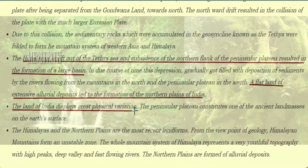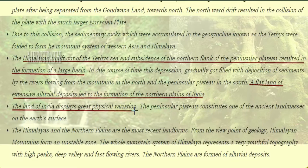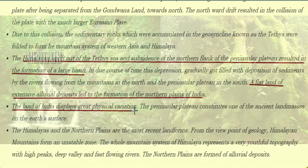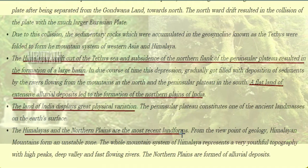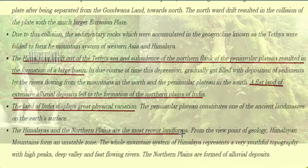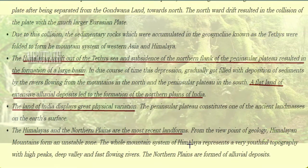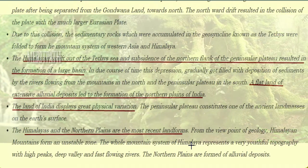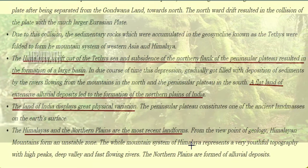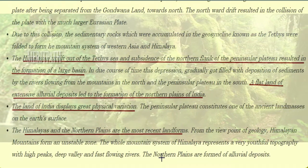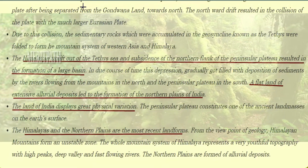The land of India displays great physical variation. The peninsular plateau constitutes one of the ancient landmasses of the earth's surface, while the Himalayas and the northern plains are the most recent landforms. From the viewpoint of geology, the Himalayan mountains form an unstable zone, representing a very youthful topography with high peaks, deep valleys and fast flowing rivers. The northern plains are formed of alluvial deposits.